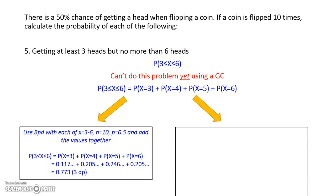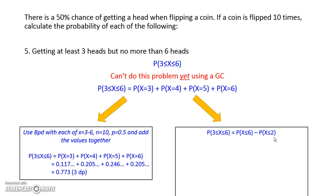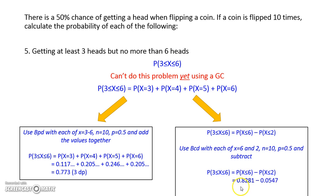The second approach rewrites the problem. We say the probability that 3 is less than or equal to x, which is less than or equal to 6. We find the probability that x is less than or equal to 6, then subtract the probability of x being less than or equal to 2, since we're not interested in anything lower than 3. Now that we have less than or equal to signs, we use BCD. The probability of x less than or equal to 6 is 0.8281, and the probability of x less than or equal to 2 is 0.0547.